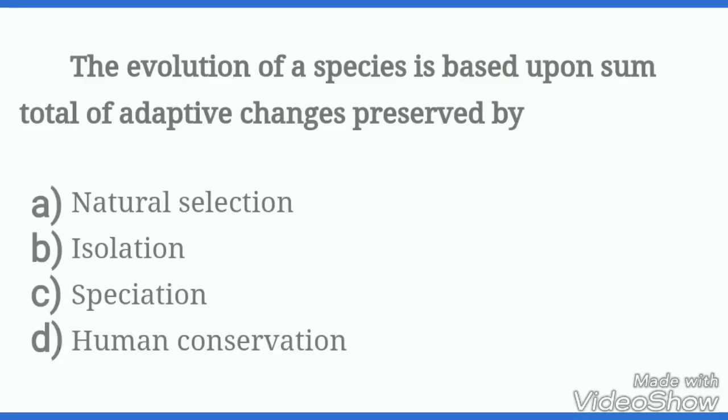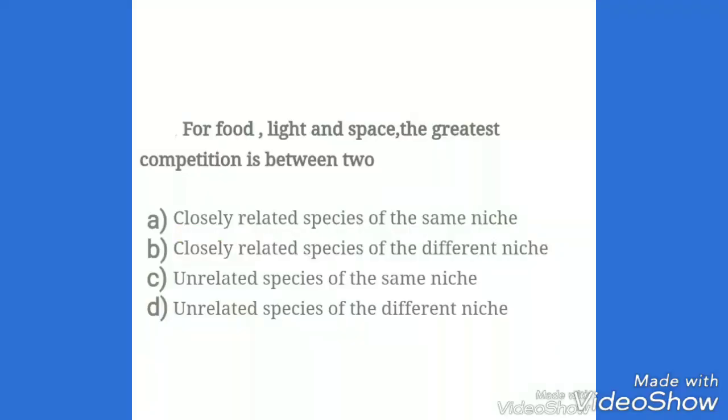The next question is: the evolution of a species is based upon some total of additive changes preserved by? The correct option is number B, that is isolation. For food, light and space, the greatest competition is between two closely related species of the same needs. So correct option is number A.